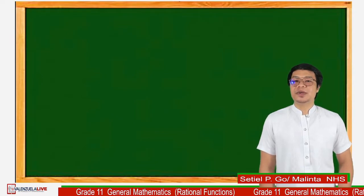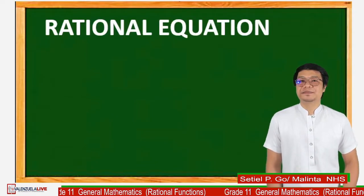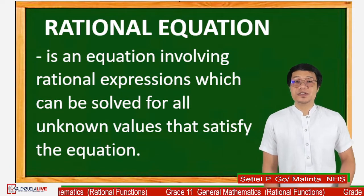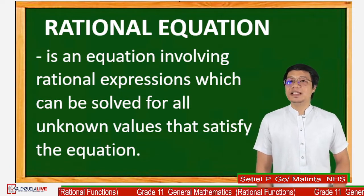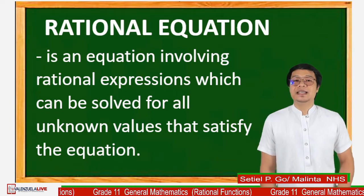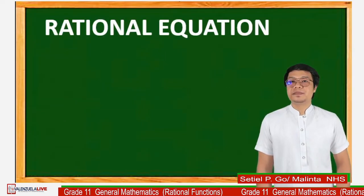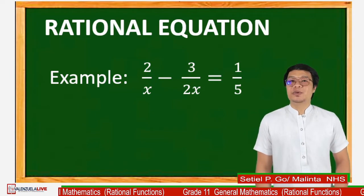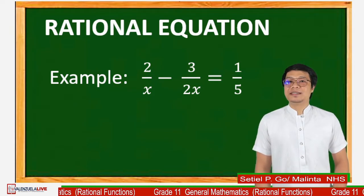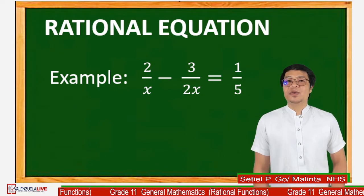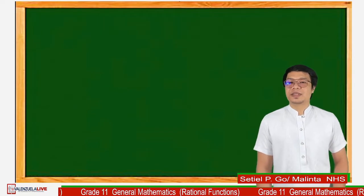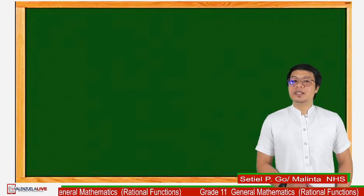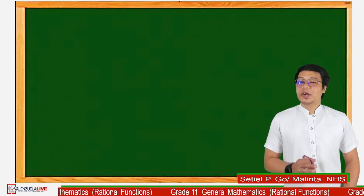Let us now discuss the rational equation. What is a rational equation? A rational equation is an equation involving rational expressions which can be solved for any unknown values that satisfy the equation. For example: 2 over x minus 3 over 2x is equal to 1 over 5. There will be a specific value for the given variable in the equation.